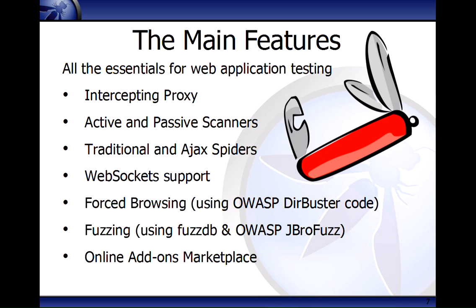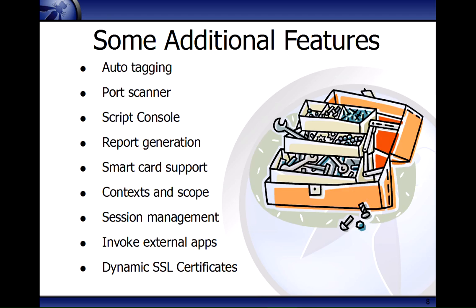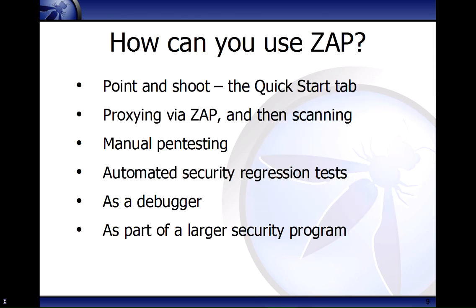ZAP has a load of features — basically all the features you'd really expect. So it's an intercepting proxy, it's got active and passive scanners, traditional and Ajax spiders, WebSocket support, and loads of additional features. If you want to learn more about these, the best thing is to look at the website, look at other presentations I've done, and play around with the tool — because that's the best way to learn.